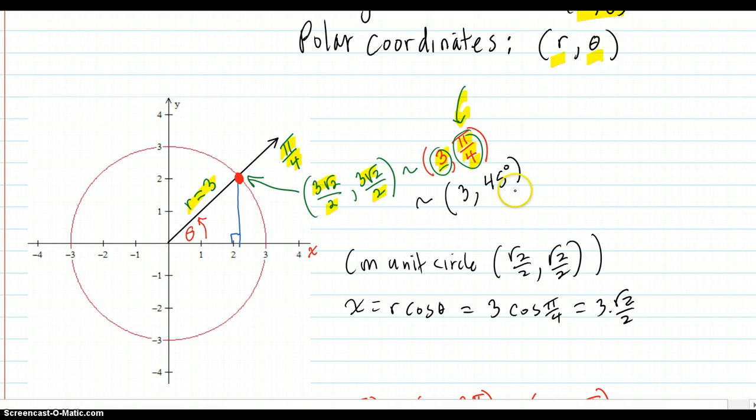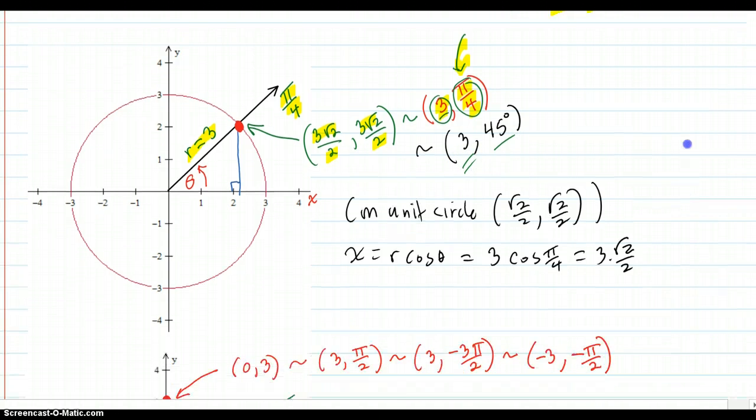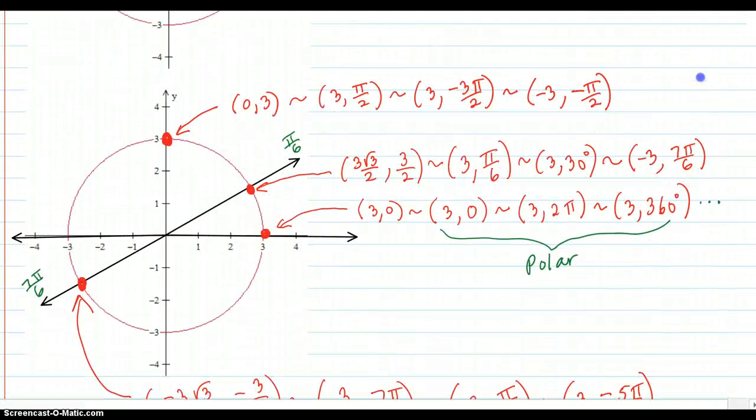It also works with degrees although we're primarily going to be using radians. So, you know, 45 degrees radius 3 gets to that point. Here's another example here.